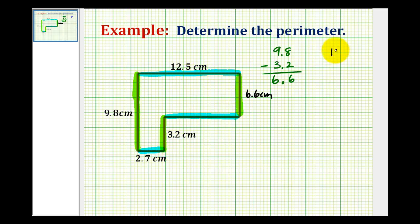So 12.5 minus 2.7 would give us the length of this missing side. So we have to borrow here, 15 minus 7 is 8. Make sure we bring the decimal point down. And here we have 11 minus 2, which is equal to 9. So the length of this missing side here is 9.8 centimeters.